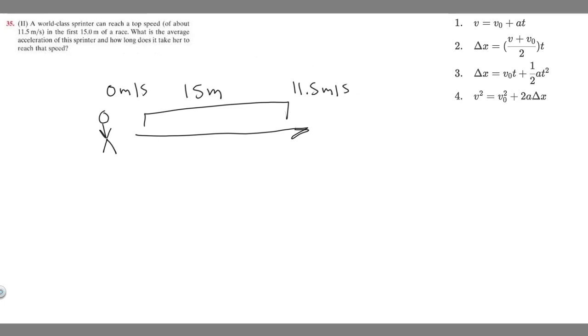We know that its final velocity which we represent by v is 11.5 meters per second. The initial velocity which we represent by v sub zero equals zero meters per second. The amount it travels which is 15 meters we represent by delta x or the change in position, so that equals 15 meters. Now let's see what we're trying to find.